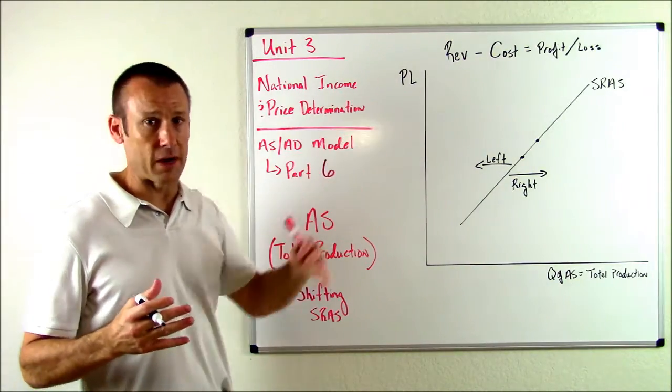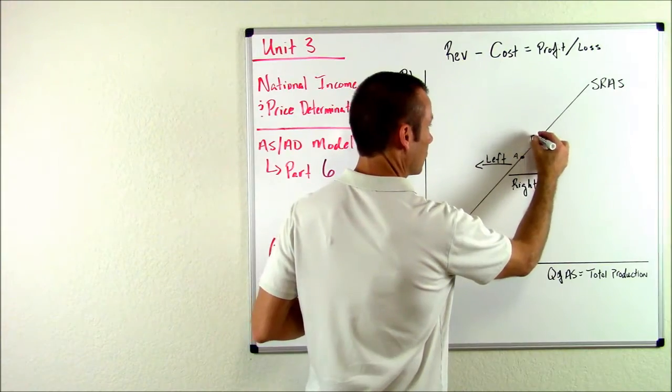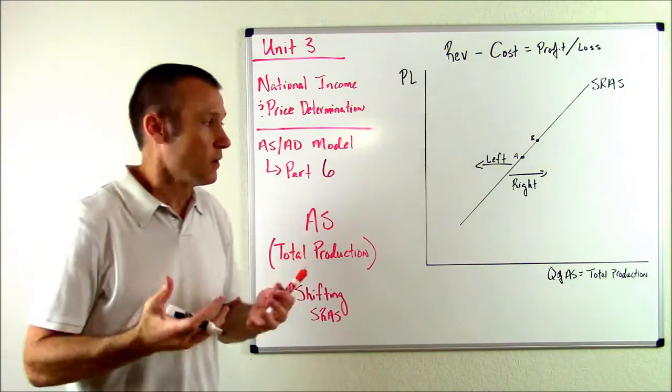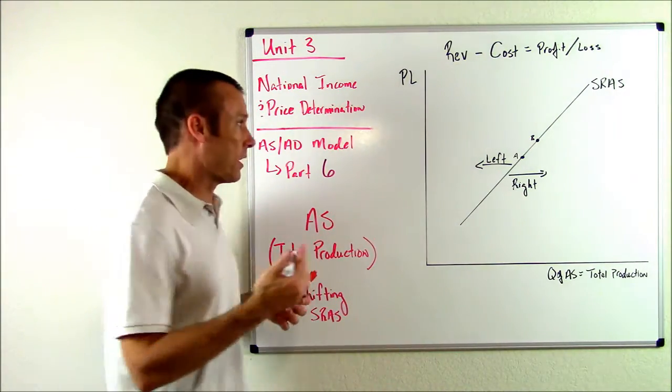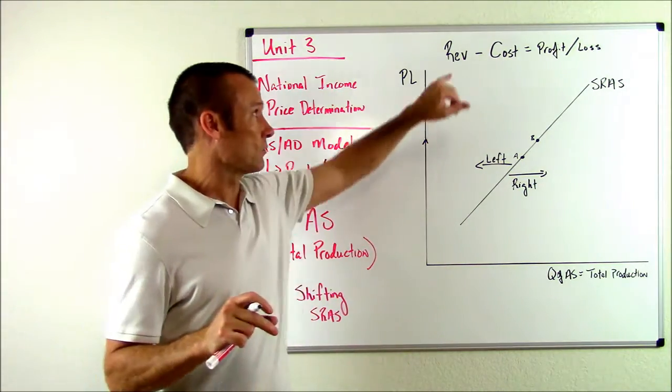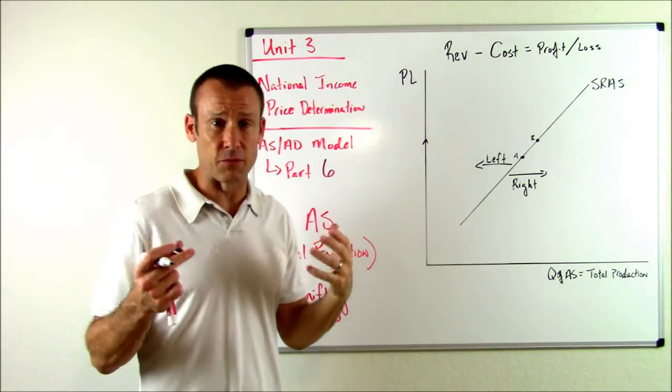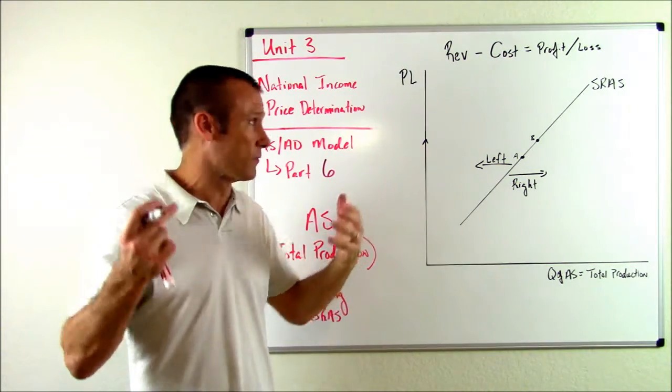That would be, of course, a change in the price level. So if I was to go from this point, I'll call that point A to point B, all right? Of course, the price level must have gone up. And when the price level goes up, what I've told you in other videos is revenues go up for businesses. When the price is up, their final goods and services go up, their revenues go up.